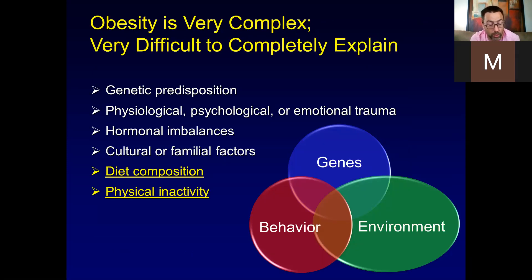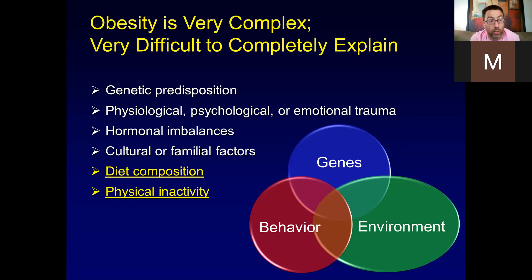Obesity is difficult to completely explain. There is a strong genetic predisposition — if your parents are not obese by BMI, you have a much greater chance of also not being obese, and vice versa. There are also physiological and psychological factors: people who have suffered from emotional trauma, PTSD, or abusive relationships tend to be at greater risk of becoming obese. Some hormonal conditions, especially related to thyroid hormones, also play a role.